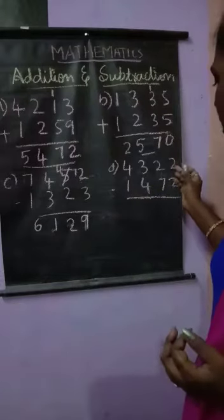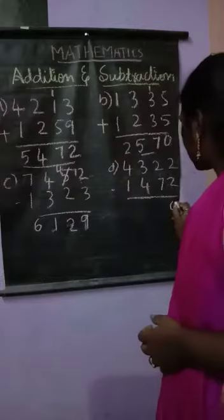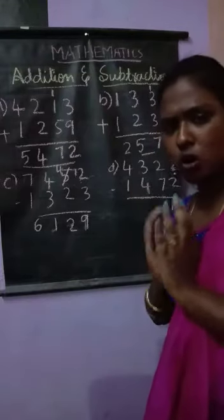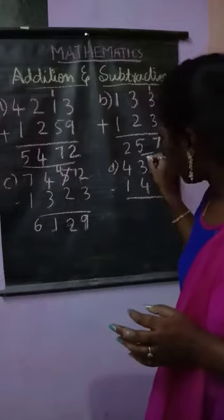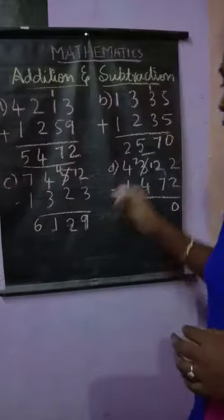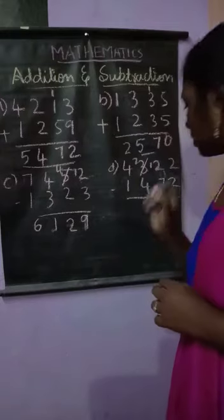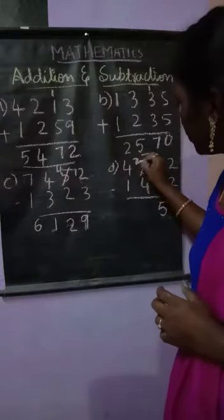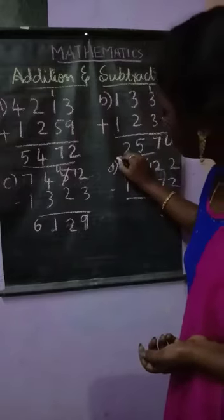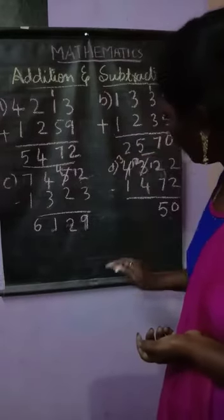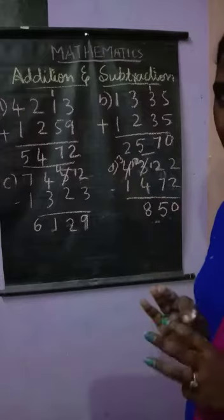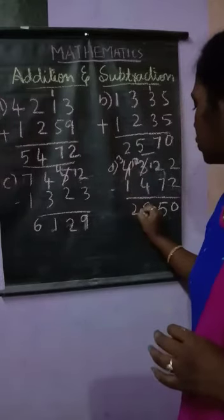Let us solve one more problem. Here I have 2 minus 2 is 0. Then 2 minus 7 — can I subtract 2 from 7? No, because 2 is smaller than 7. So I take a borrow: 3 becomes 2, and 2 becomes 12. So 12 minus 7 is 5. Next, 2 minus 4 — not possible, so I take a borrow again: 4 becomes 3, and 2 becomes 12. 12 minus 4 is 8. Now the column has 3, not 4, so 3 minus 1 is 2.